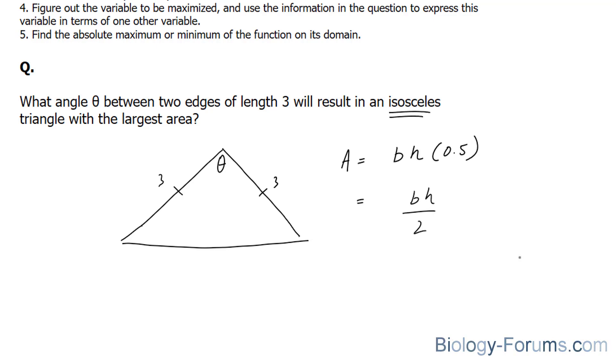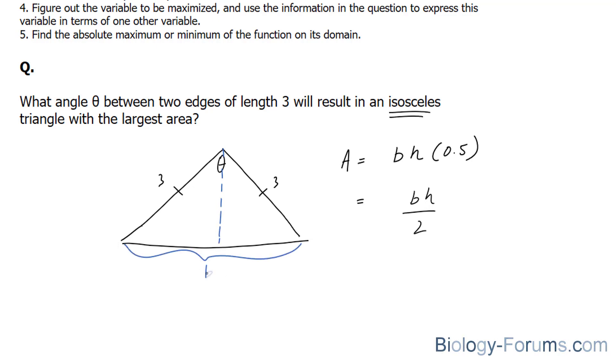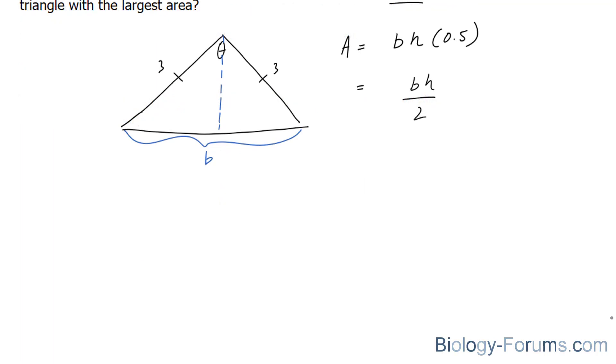We don't know the height, nor do we know the base. Let's show that the height is this and the base is the length from here to here. Now to generate our formula, what we could do is split this triangle into half. And if we do that, we end up with two right triangles.